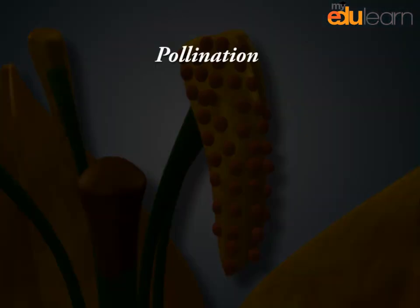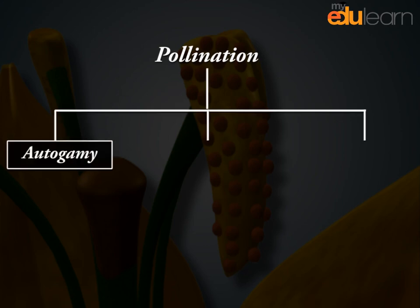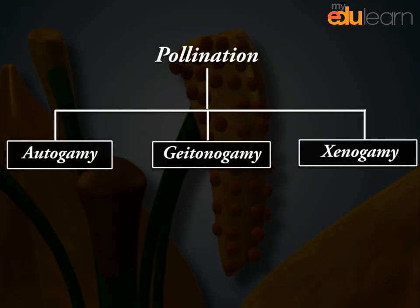Based on the source of pollen, pollination is of three types: Autogamy, Geitonogamy, and Xenogamy.